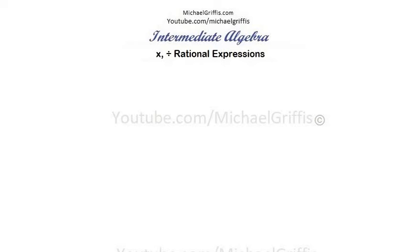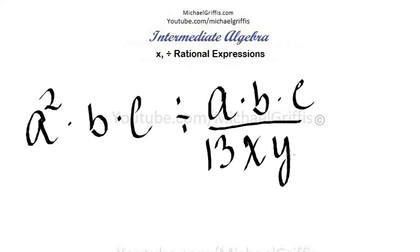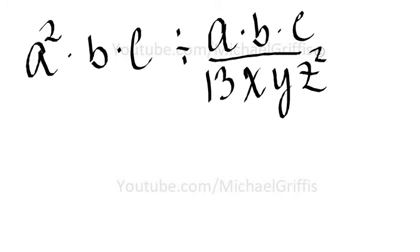What do we have next? Okay, a squared times b times c divided by a times b times c over 13x times y times z squared.